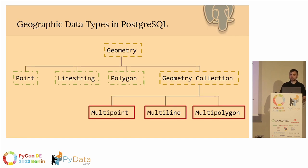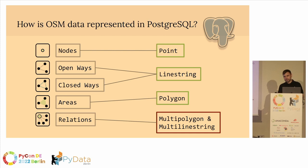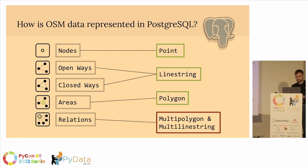What do these data types actually look like in PostgreSQL? We have a root geometry object, and below that we have points, line strings, and polygons. On the same level, we have something called a geometry collection, and below that we have multipoint, multiline, and multipolygon. These map pretty cleanly to OSM data types — nodes map to points, open and closed ways are represented as line strings, areas are represented as polygons, and relations can be represented as multipolygon or multiline string. It's basically a one-to-one mapping.